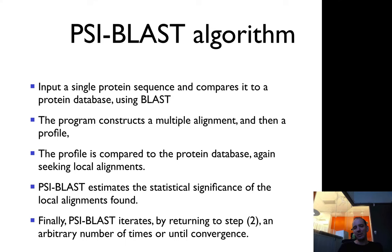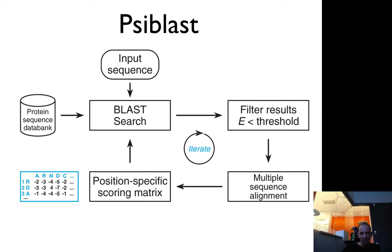It basically runs BLAST, constructs a multiple sequence alignment, and uses that to make a profile, then uses this profile to search the database again for more sequences, and keeps on iterating through that several times. In short, you have your input sequence and you search a protein sequence database using standard BLAST, then you filter results depending on the probability threshold. This takes advantage of the good quality of BLAST, which is good at knowing the accuracy of your alignment or your hits.